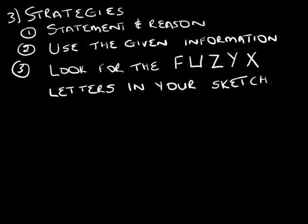The third thing you need to do in geometry is always look for your F, X, Y, Z letter shapes in your sketch. Look for the corresponding, co-interior, alternate, vertically opposite, and angles on a straight line.